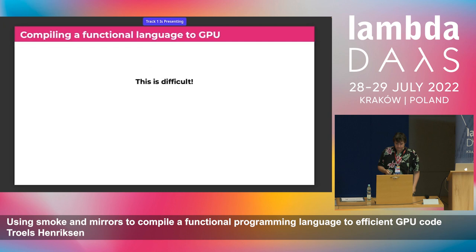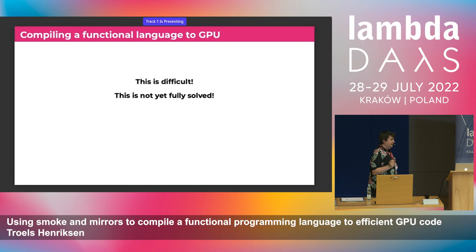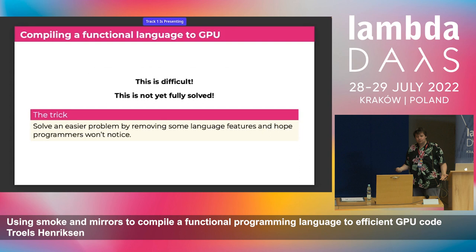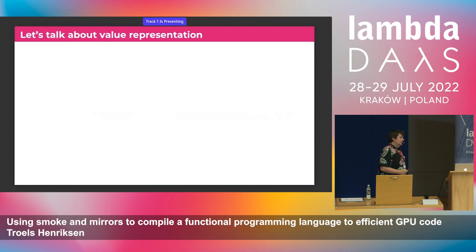Getting coalesced memory access right is difficult, especially for a functional language, because by the very nature of functional programs they tend to be very irregular with lots of dynamic behavior and non-regular memory accesses. So compiling a functional language to GPU is very difficult and not yet fully solved. The trick we use very aggressively is to simplify the problem by removing language features and hoping programmers don't notice — explaining workarounds when they do. We significantly shrink the idea of what a functional language is until we can fit it on a GPU.